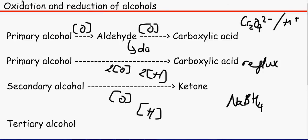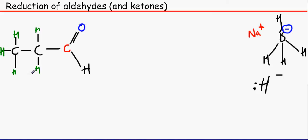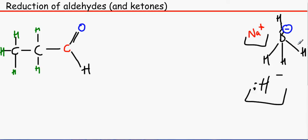So how does this actually happen? We've got our aldehyde and we've got the sodium borohydride. Sodium is a cation and the BH4⁻ is an anion, so we have a negative charge on the borohydride. This borohydride is a great source of hydride ions — one of the hydrogens detaches from it, the electron goes to the hydrogen, and we have an excess of an electron. Hydrogen has only one electron and we've got two here, so we have a hydride ion.